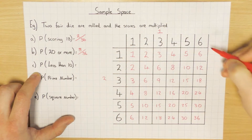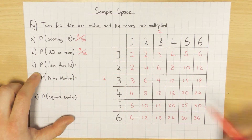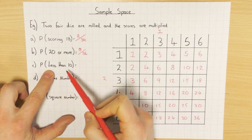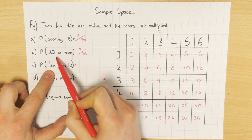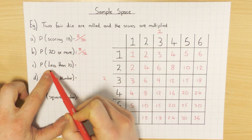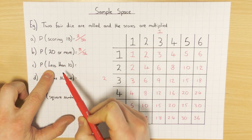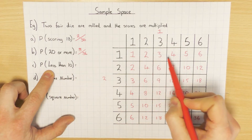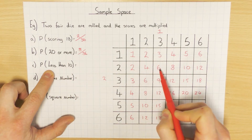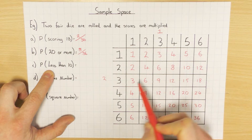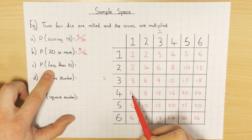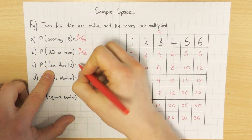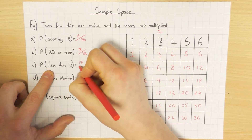Part c: what's the probability of getting less than 10? Note this says less than 10, so it does not include 10 - anything strictly less than 10. Counting through the sample space: 1, 2, 3, 4, 5, 6, 7, 8, 9, 10, 11, 12, 13, 14, 15, 16, 17 - so 17 out of 36.